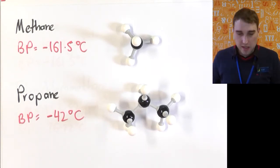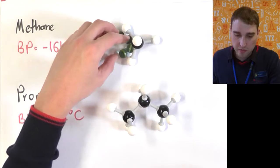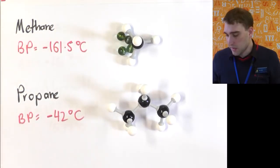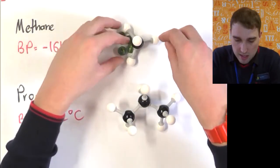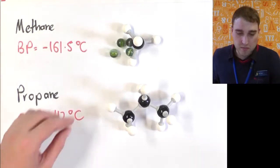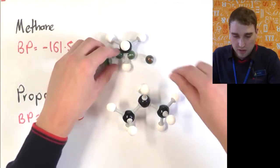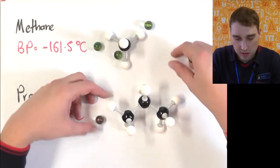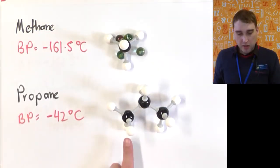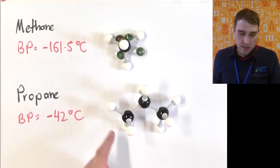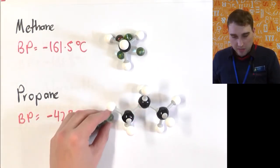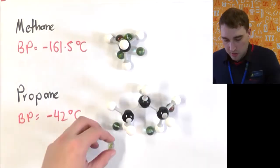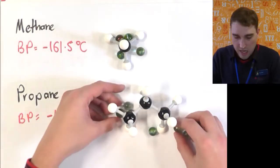If we look at methane, the number of electrons circulating around methane is based on how many protons you've got in the nuclei of all the atoms. We can represent that using four electrons whizzing around really, really quickly around the methane molecule. If we look at propane, we've got a lot more atoms now — extra carbons and extra hydrogens — and that means we've got a lot more electrons moving around the molecule.